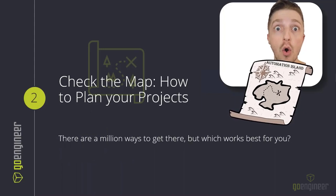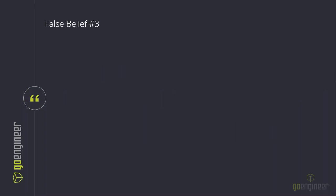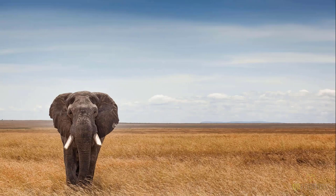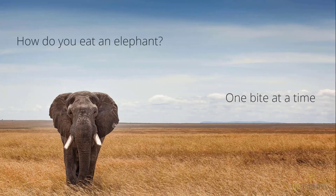The only trick is to get started, which leads us to our next topic: how to plan your projects. All good projects start with a good plan, and when there are a million ways to do a million things, how do you choose what's most important? Before we begin, false belief number three: 'I don't know where to begin.' This starts with a mantra — how do you eat an elephant? One bite at a time. The best way to accomplish a big task is to just start, and in this section I'll show you how to be successful at doing exactly that.